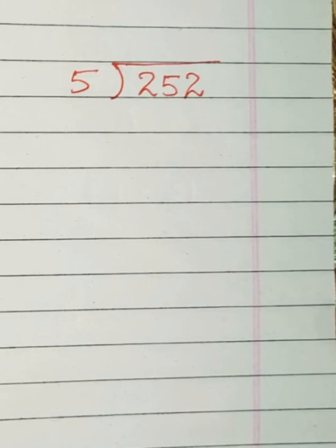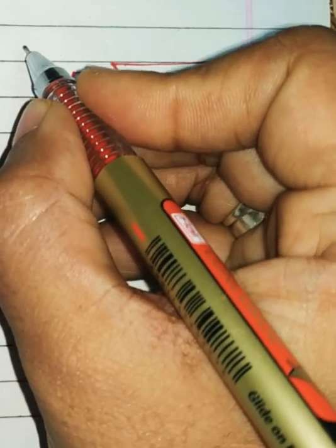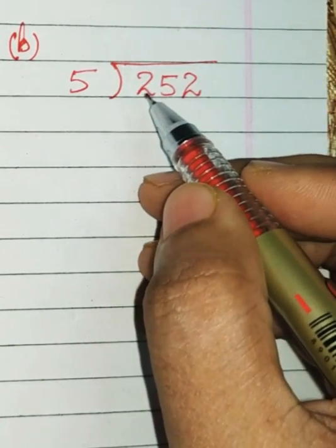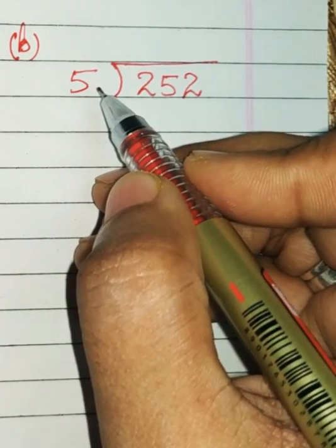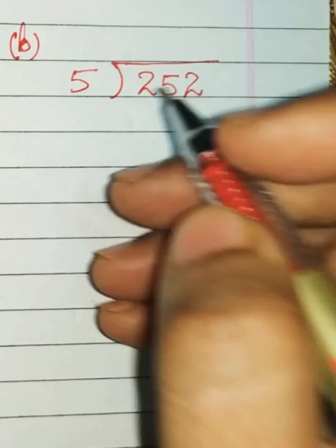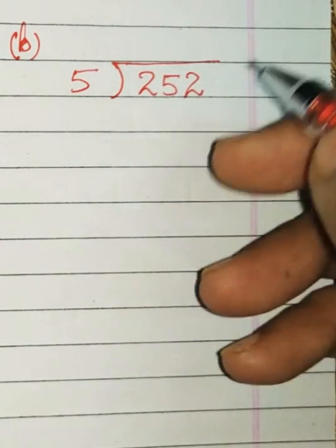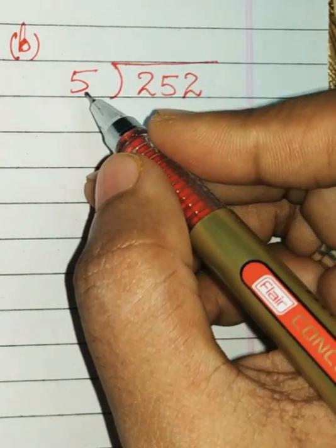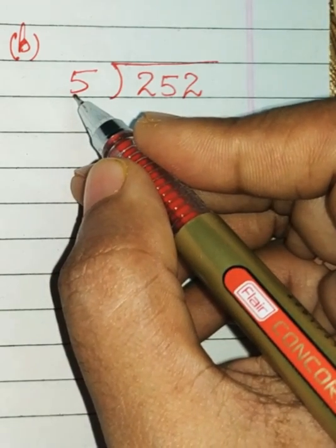Now children, let's see the second example. I have written here 252 divided by 5, and I know there are a lot of confusion regarding this question. How to do it when the first digit is less than 5?